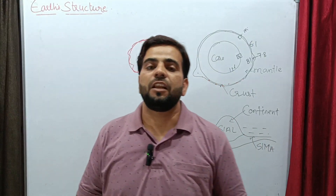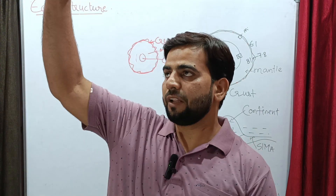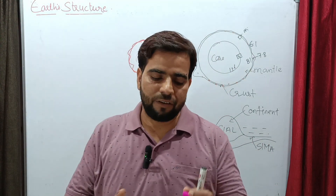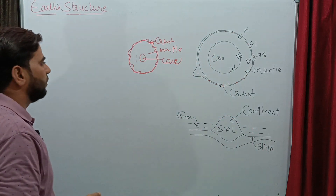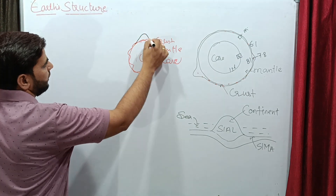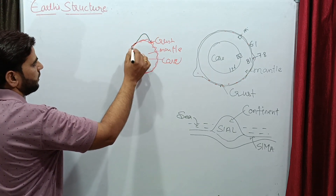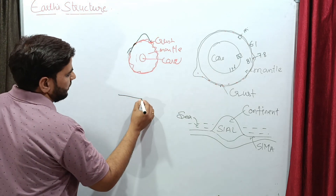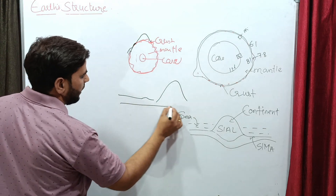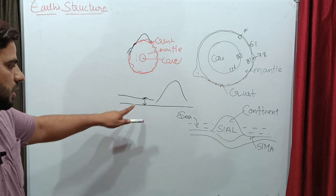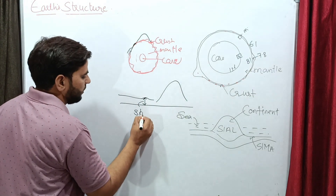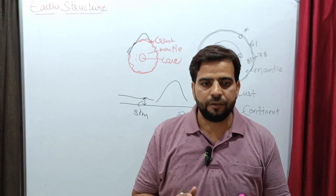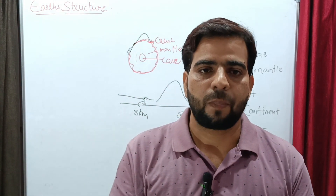The average thickness of the crust is 24 kilometers. When we look at the oceanic part — the depth of crust below the ocean — it is nearly five kilometers. So the thickness of the crust below the ocean is five kilometers.